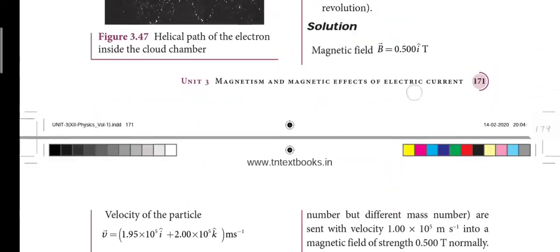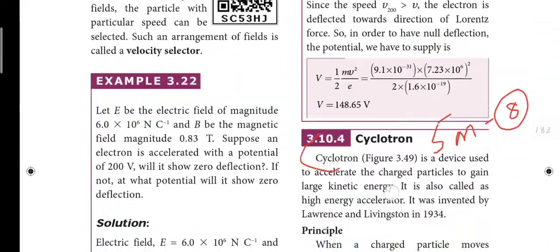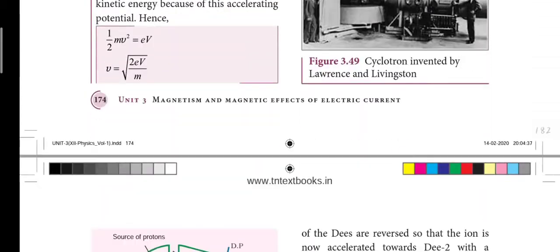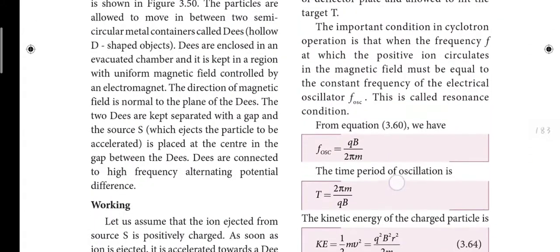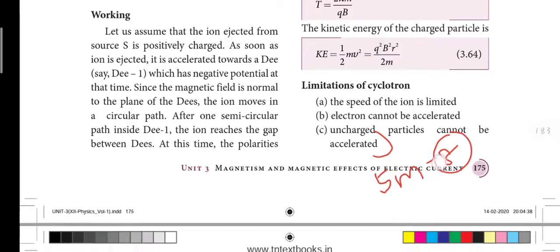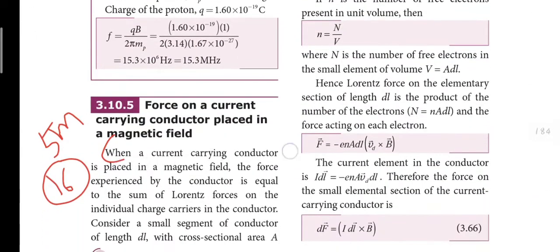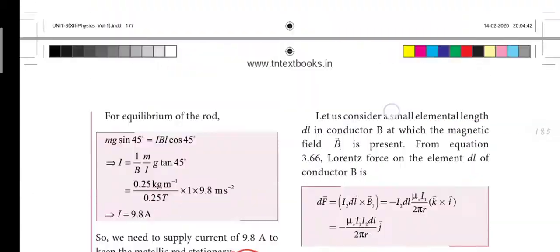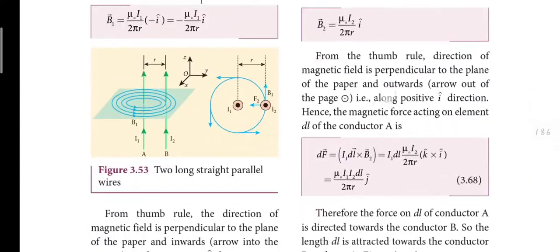Next is the cyclotron — its principle, construction, working, limitations, and energy equation make up the 8th five-mark important question. Next is the force on a current-carrying conductor placed in a magnetic field — the 16th five-mark question, with special cases. Also important is the force between two long parallel current-carrying conductors — the 13th five-mark question.